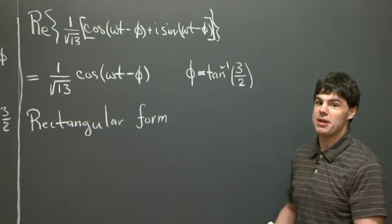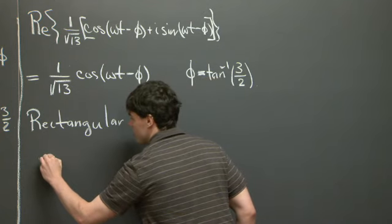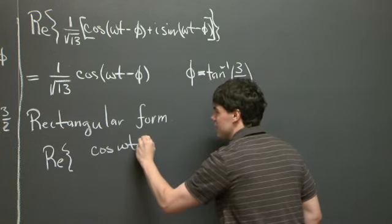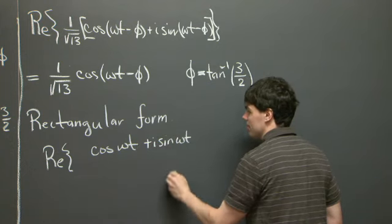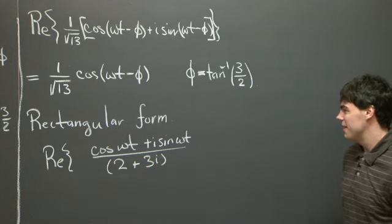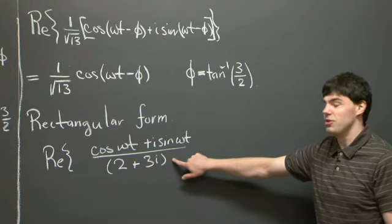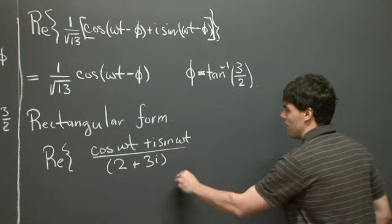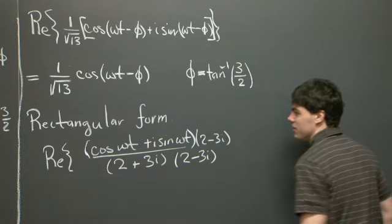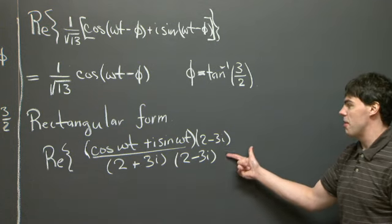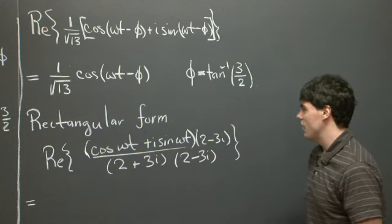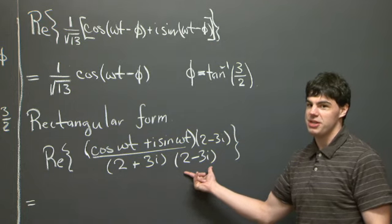For the rectangular form calculation, I'll use Euler's formula to expand the numerator. So the numerator becomes cosine(omega t) plus i sine(omega t), and the denominator is 2 plus 3i. To turn the denominator into a real number, we multiply the top and bottom by the complex conjugate of the denominator — that is, 2 minus 3i. When we multiply out 2 plus 3i and 2 minus 3i, we have a difference of squares.